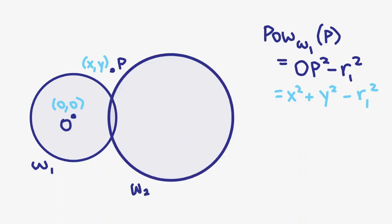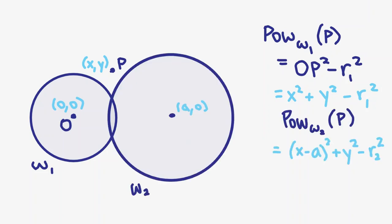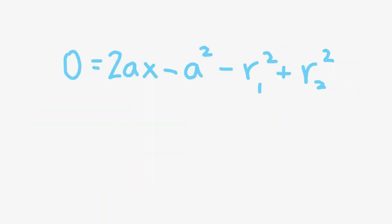If we add in a second circle, omega 2, with center at the appropriate point, we can get a second equation for the power of P with respect to this circle. Since we want these two to be equal, we can combine them into a single equation and solve. Through some expansion and like-term combining, we arrive at the following result.